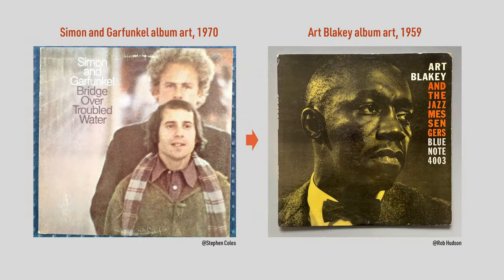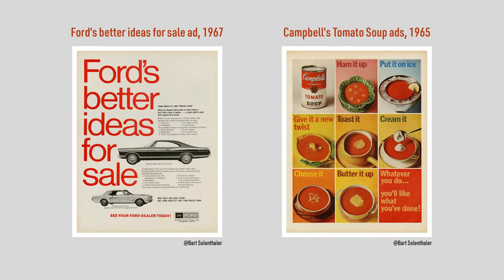For example, you could go back in time from Simon & Garfunkel's folk rock Helvetica to Art Blakey's Franklin Gothic Blues. Or instead of defaulting to Helvetica, like in this Ford ad, you could try Franklin Gothic, like in this Campbell's tomato soup ad. You get the picture.